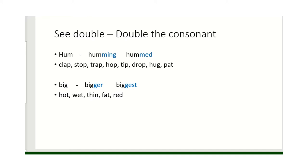Now then, this is where we have to double the consonants. So with suffixes — hum, humming, hummed. If it's a short vowel and a consonant we double the last letter. Big, bigger, biggest. The suffix -er and -est, but where it's a short vowel we double it.